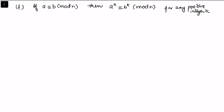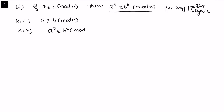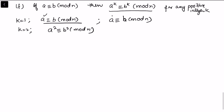For the last property, if a is congruent to b modulo n, then a raised to the power k is congruent to b raised to the power k modulo n. When k equals 1 this holds trivially. For k equals 2, since a is congruent to b modulo n, we can multiply both sides: a squared is congruent to b squared modulo n. Applying this step repeatedly, we reach a to the power k congruent to b to the power k modulo n.